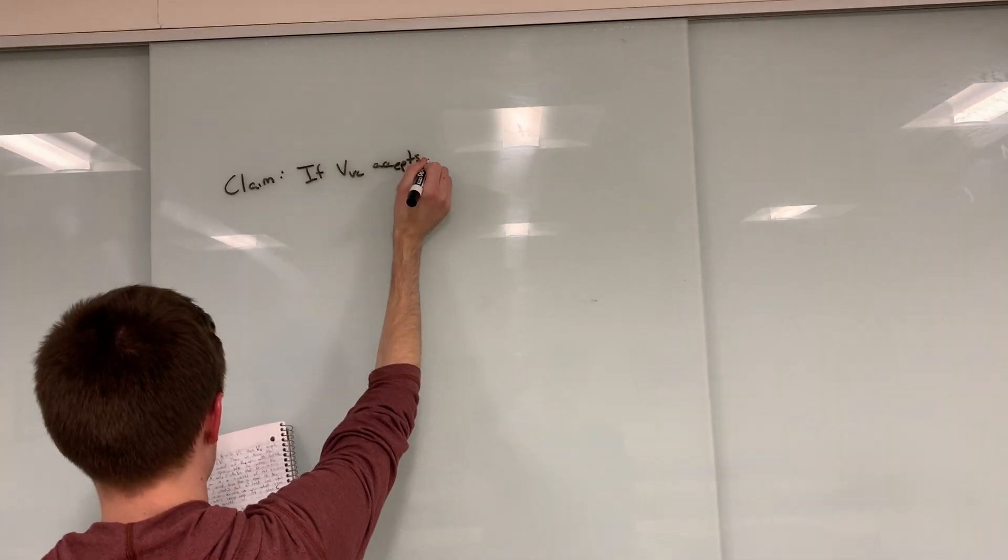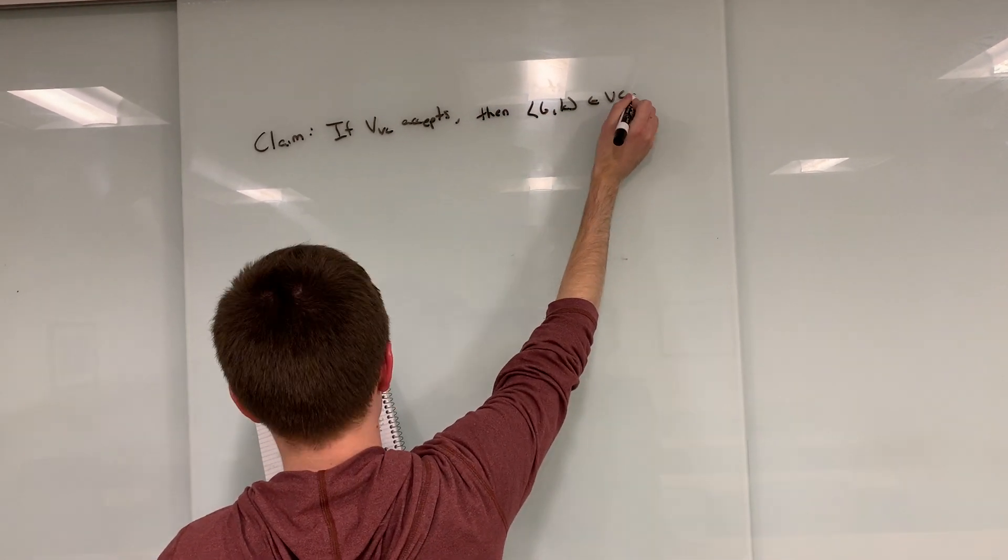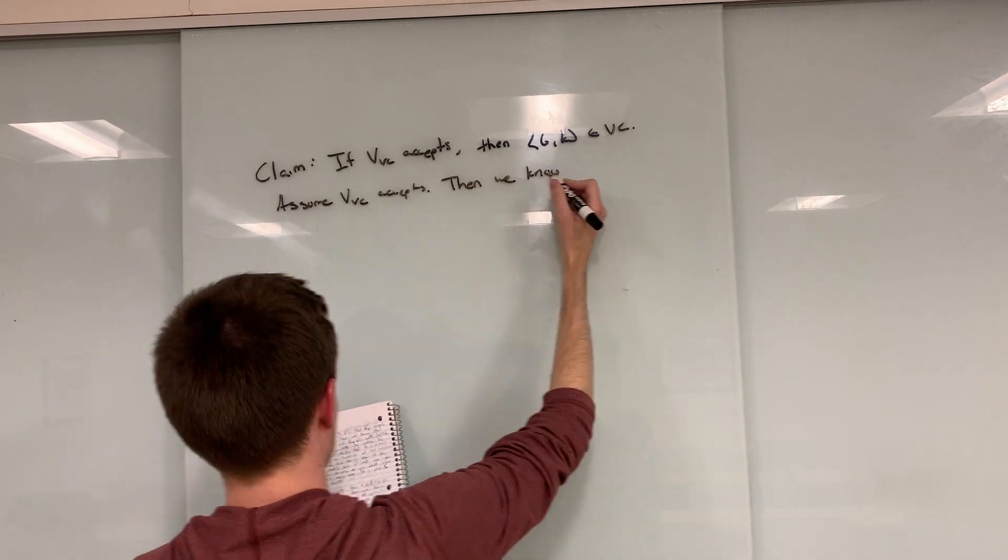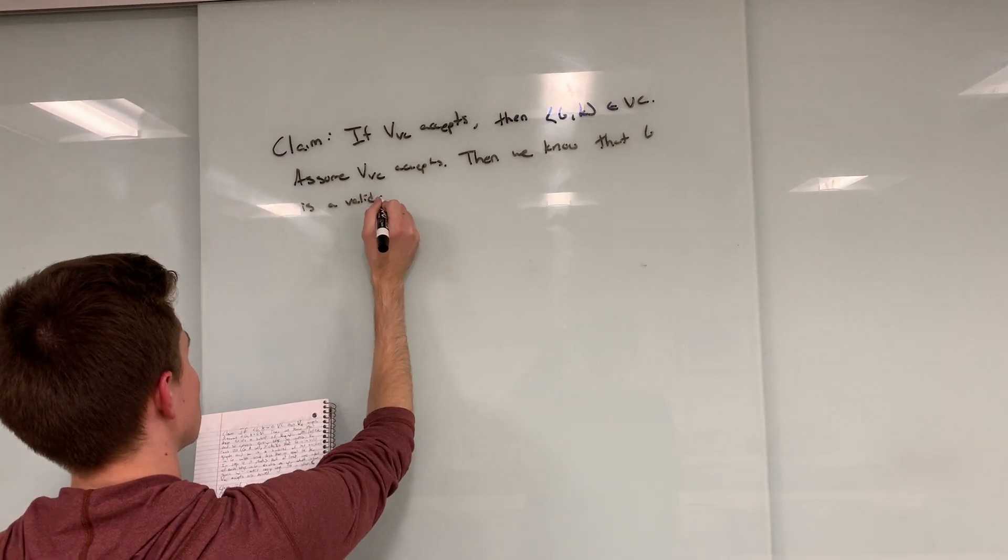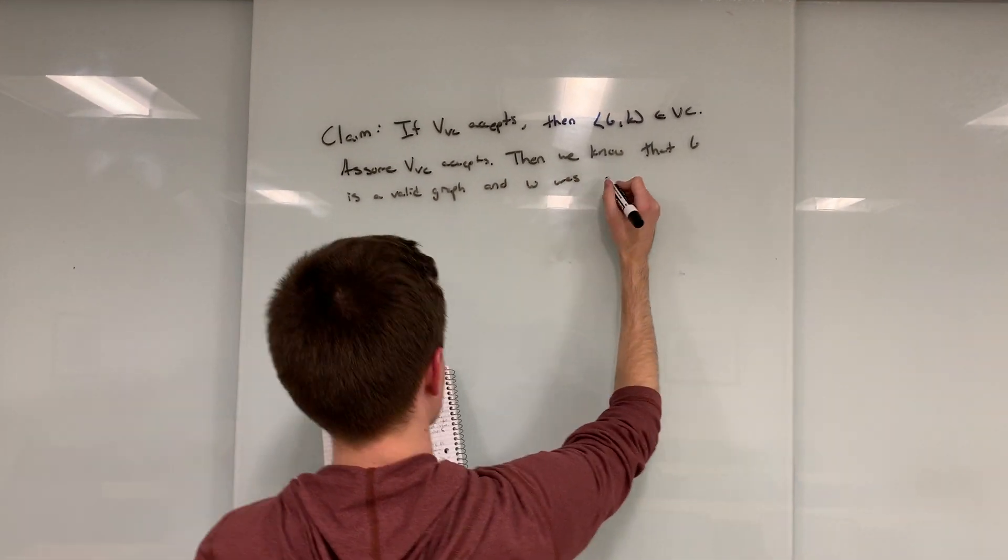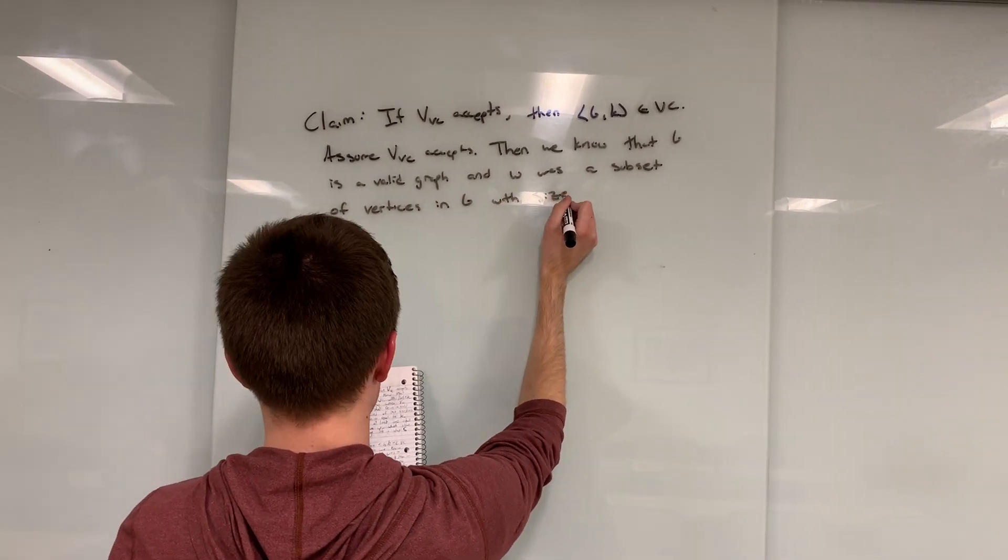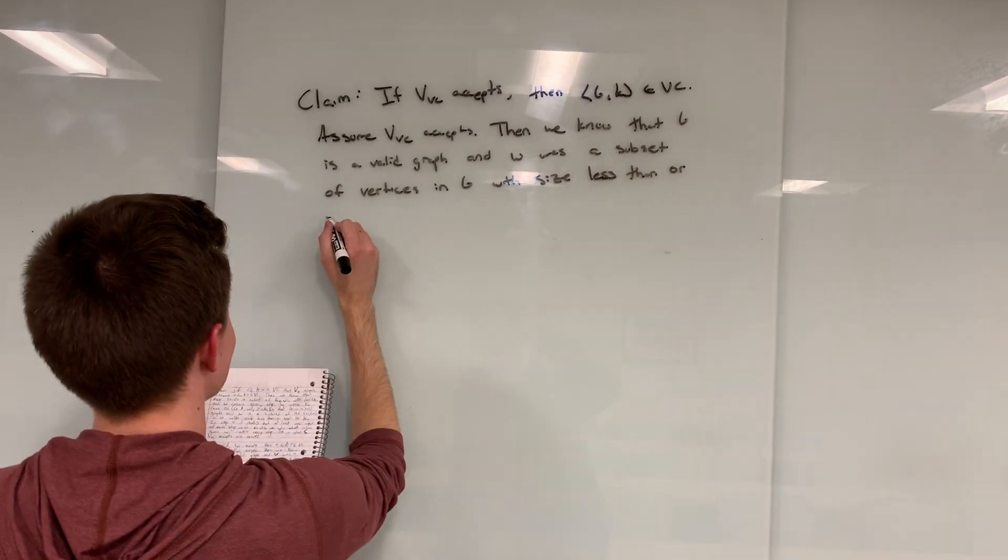We shall now prove that if the verifier accepts, G, K is in vertex cover. If we assume the verifier accepts, then we know, by definition, that G is a valid graph, and the size of W is less than or equal to K. We know this through the final steps taken in our verifier, which would have been passed if we assume it to have accepted.